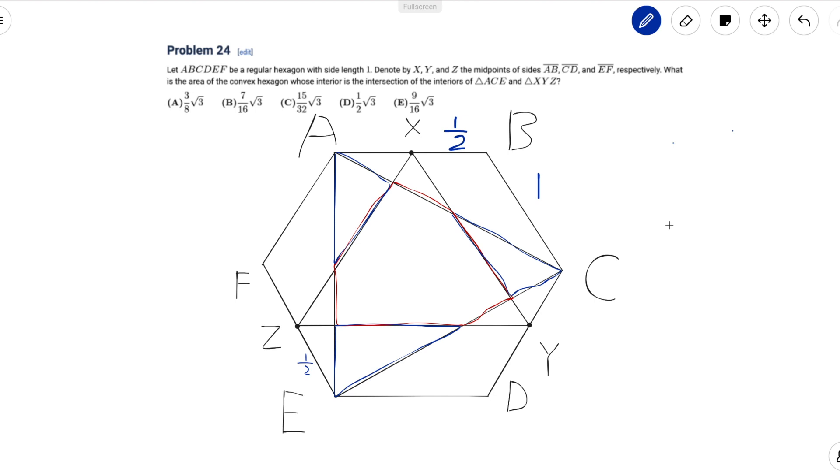Instead of finding this directly we can look at triangle ACE and the three blue triangles in ACE. If we add the area of the red section plus the three blue triangles we will get the area of triangle ACE, which means that to find the area of the red region we just have to subtract the areas of the three blue triangles from ACE.